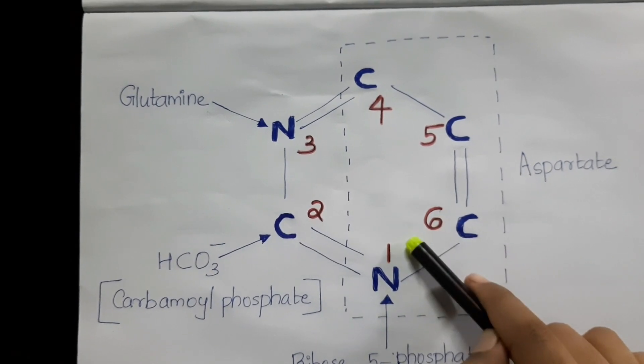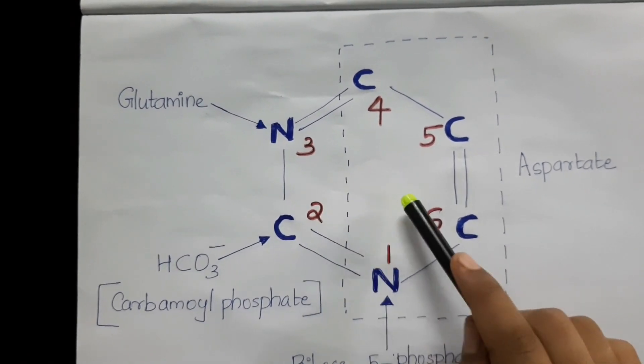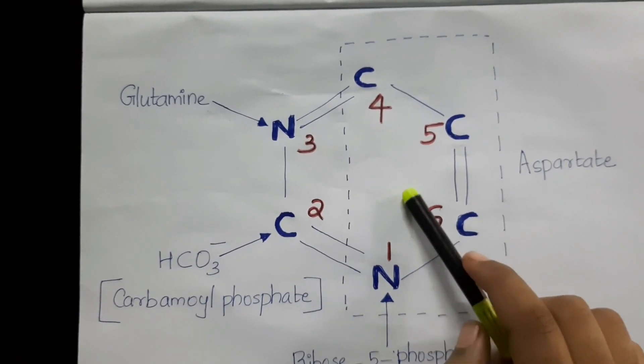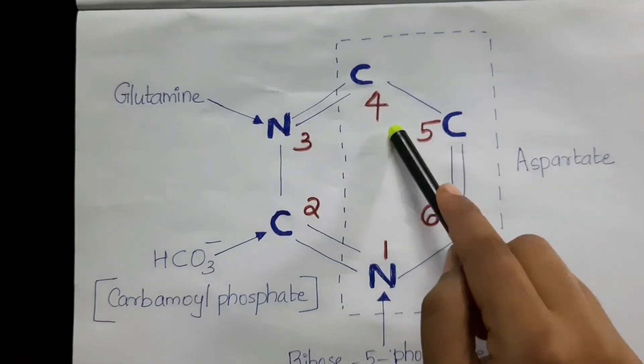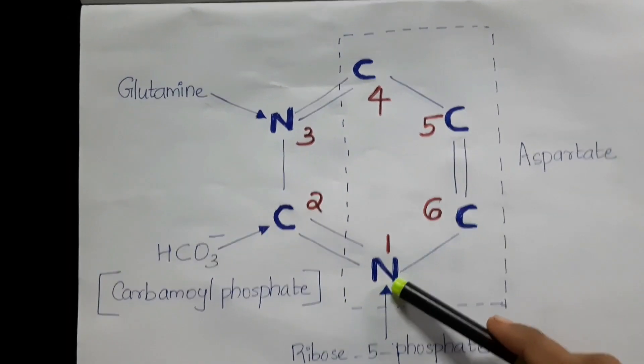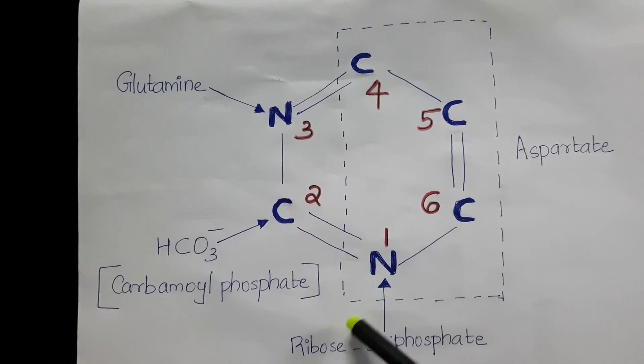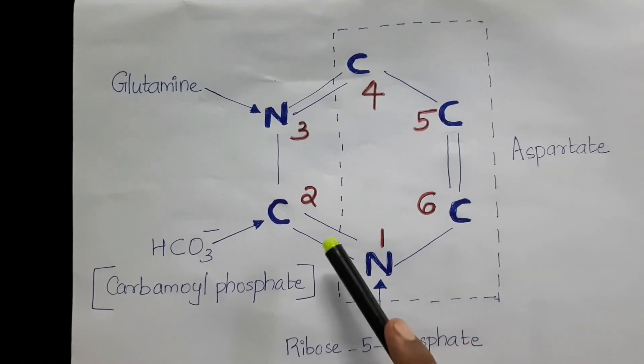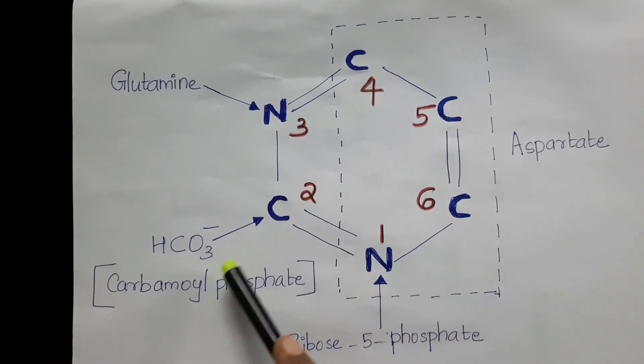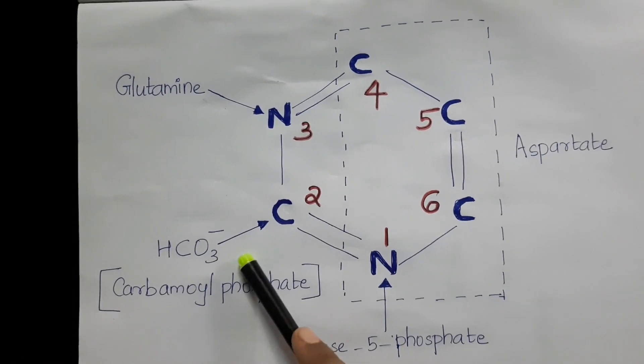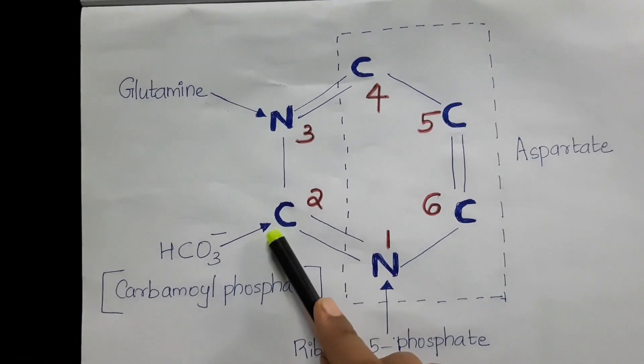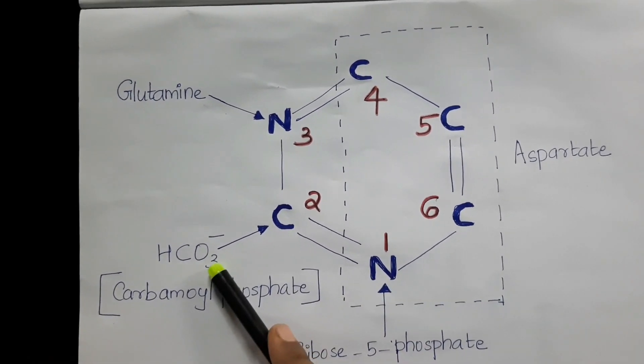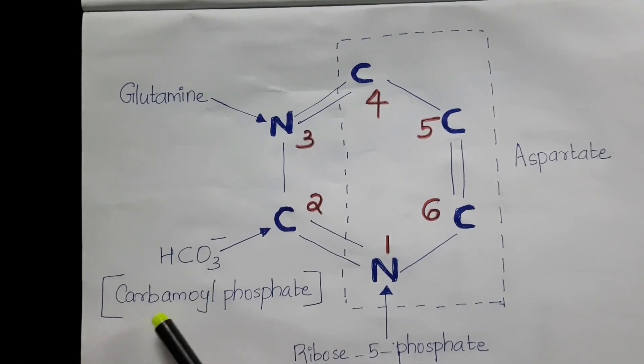Now let's see what are the different sources of carbons and nitrogens in a pyrimidine molecule. Here, we see the basic structure of a pyrimidine. The nitrogen in the first position is derived from ribose 5-phosphate. Carbon in the second position is from bicarbonate ion, but it's not directly coming from bicarbonate. The bicarbonate ion is first converted to carbamoyl phosphate.